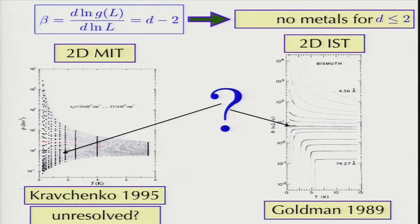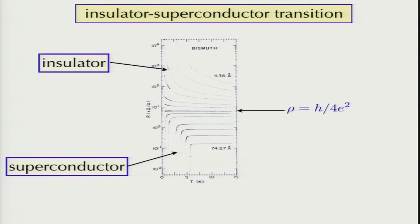Here you have films which superconduct, and you'll see the superconductivity is the Kosterlitz-Thouless transition. There is one curve that's entirely flat — this is the critical regime — and then you go into the insulator. This is around 1989; this is Goldman's data. The resistivity right at criticality is exactly the resistance for charge 2e excitations — it's magically 6.54 kilohms.